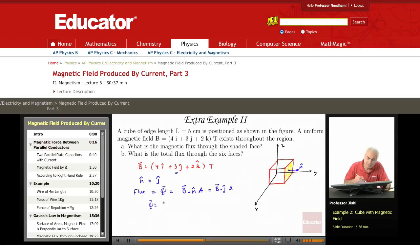So flux phi is B times - sorry, B is 4i hat plus 3j hat plus 2k hat dot j hat times the area. This one gives me dot j hat, which is zero. This one dot j hat is zero, and 3j hat dot j hat is just three, so this is three.